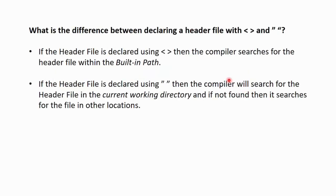Next question, what is the difference between declaring a header file with angular brackets and double quotes? If the header file is declared using the angular brackets, then the compiler searches for the header file within the built-in path. But if the header file is declared using the double quotes, then the compiler will search for the header file in the current working directory first. And if it is not found over there, then it searches for the header file in the other location.